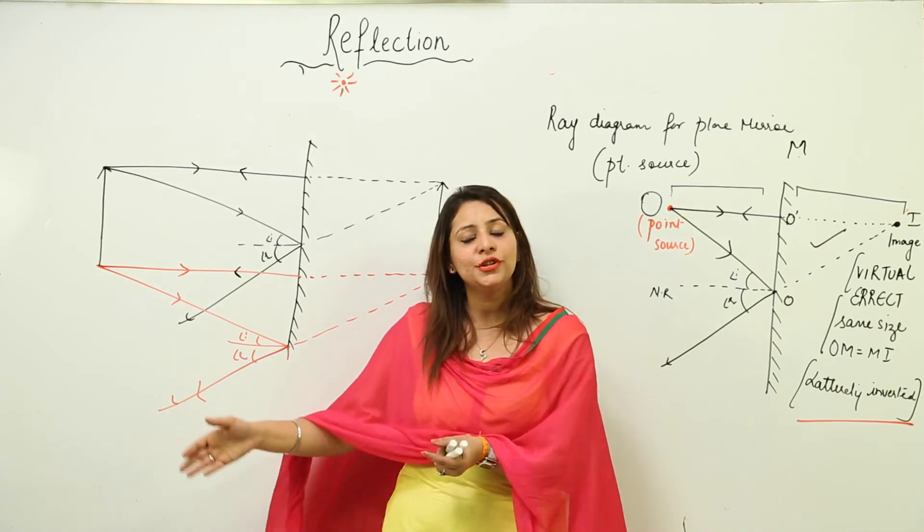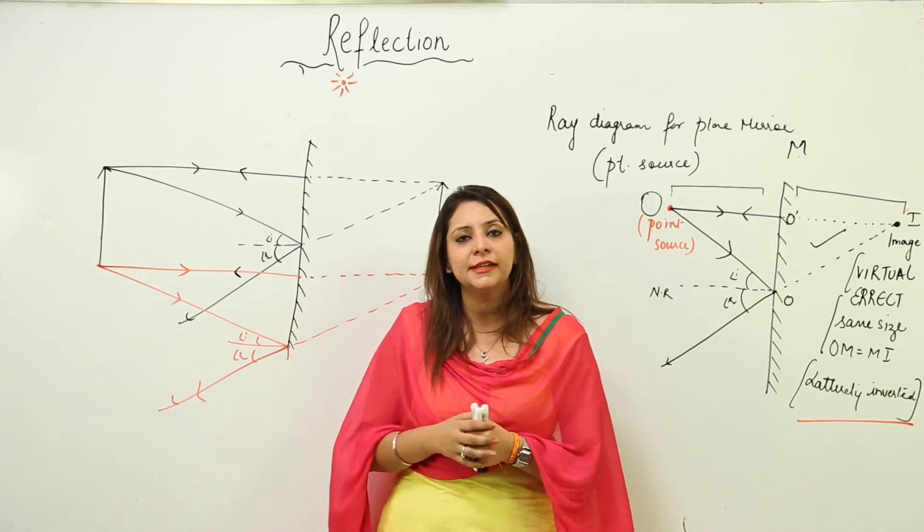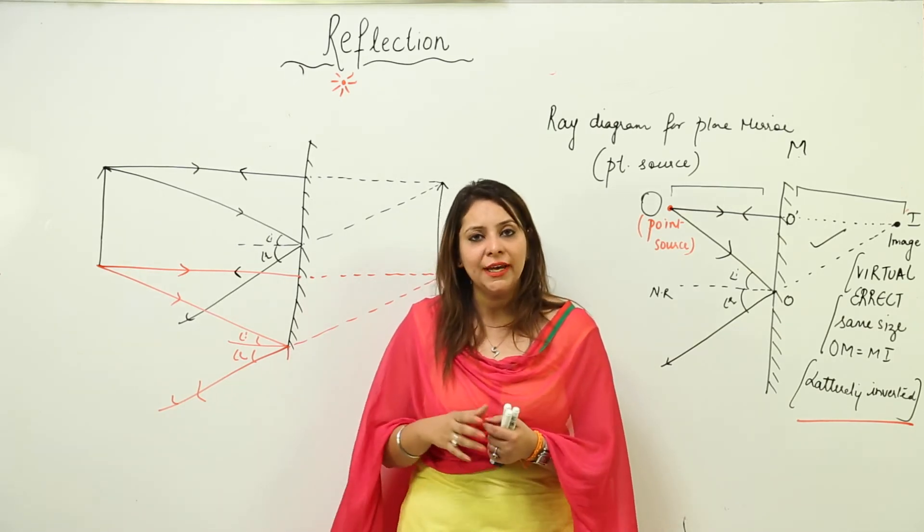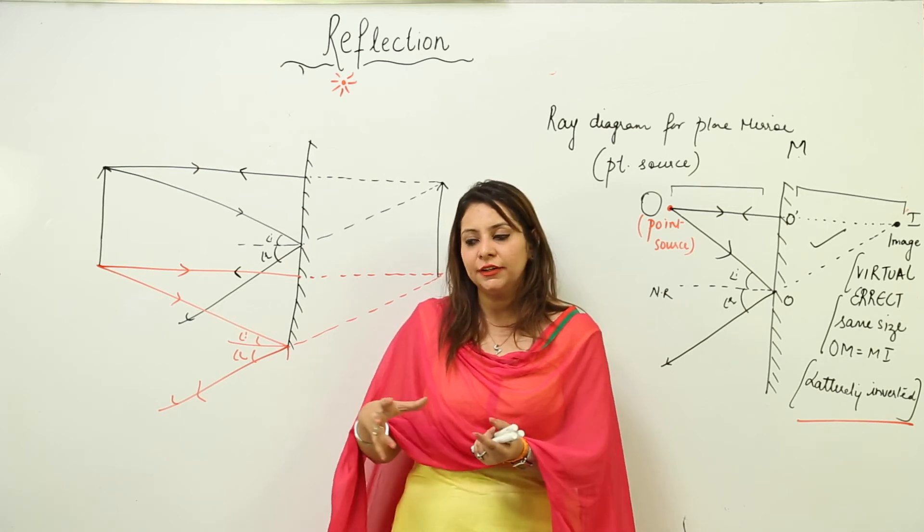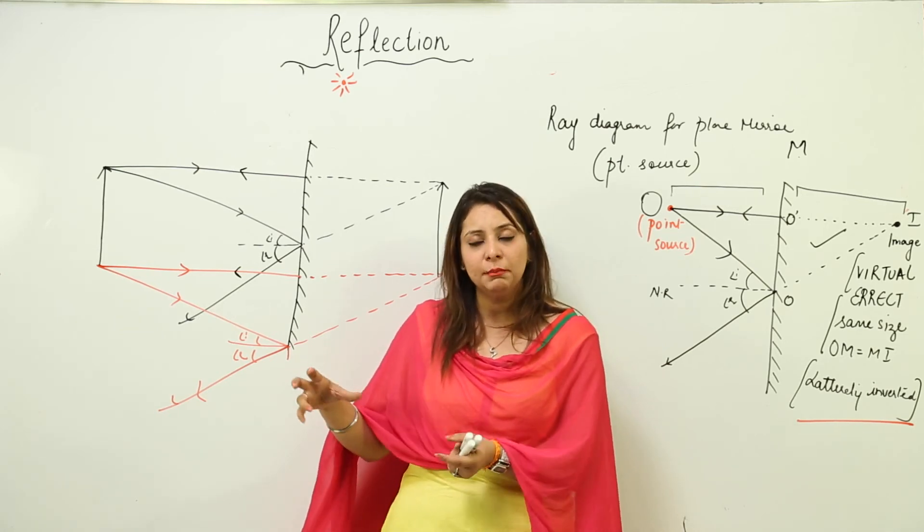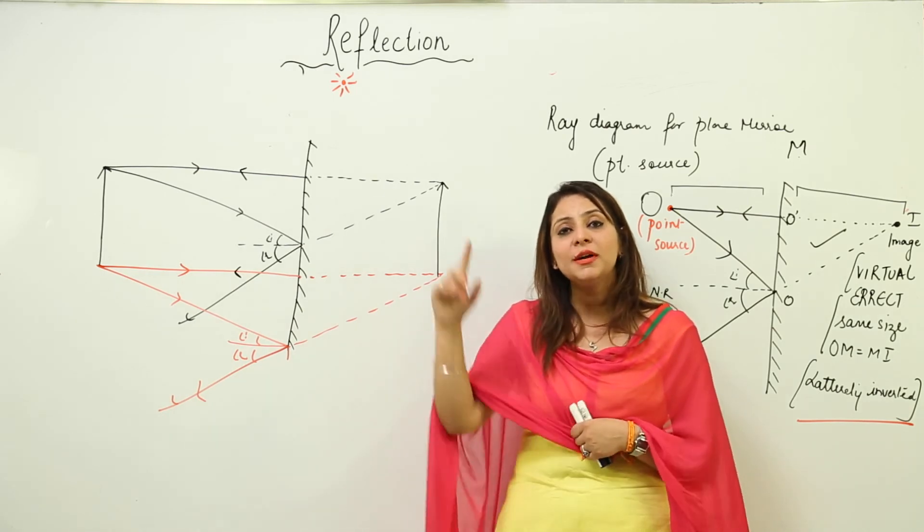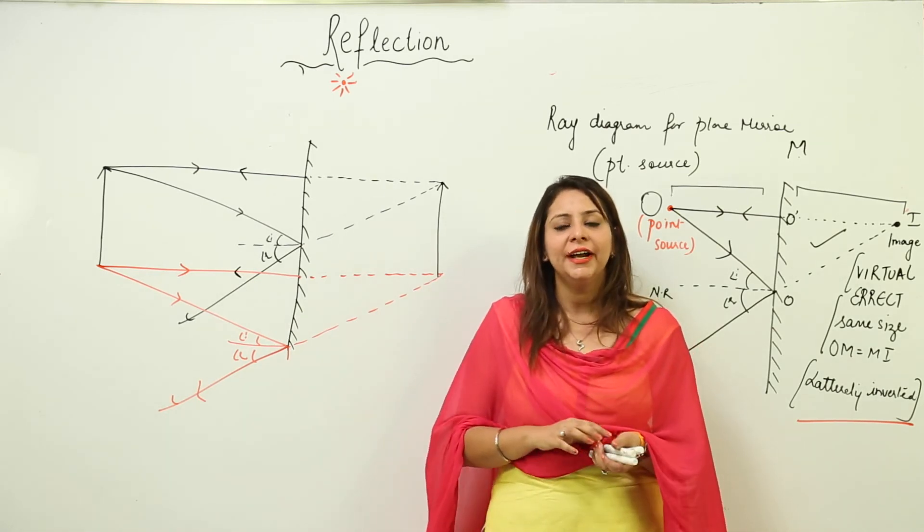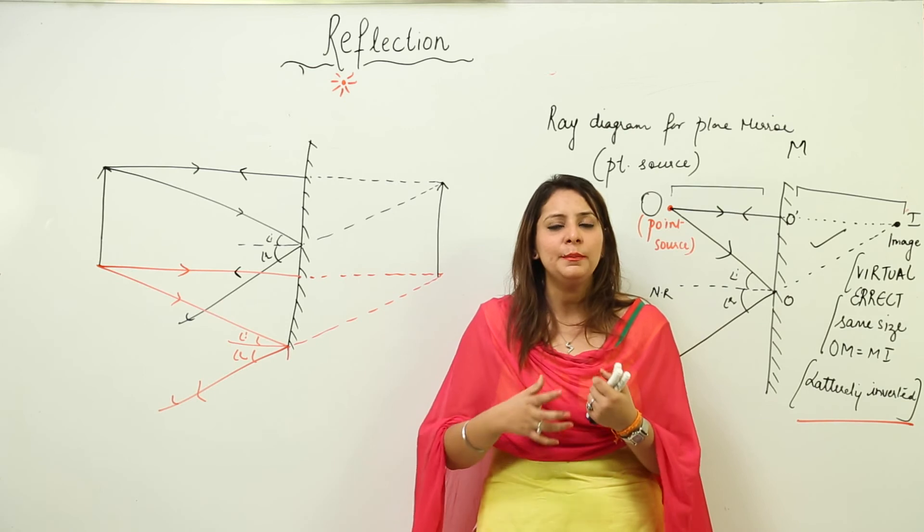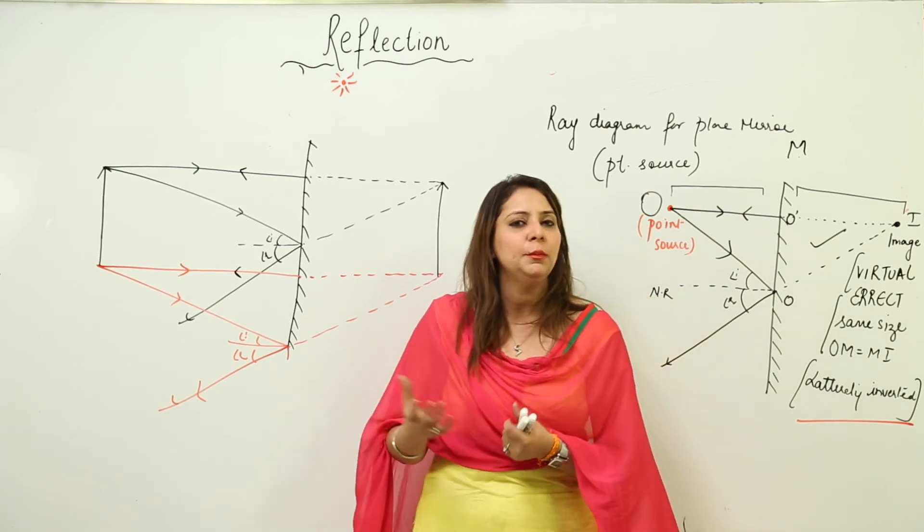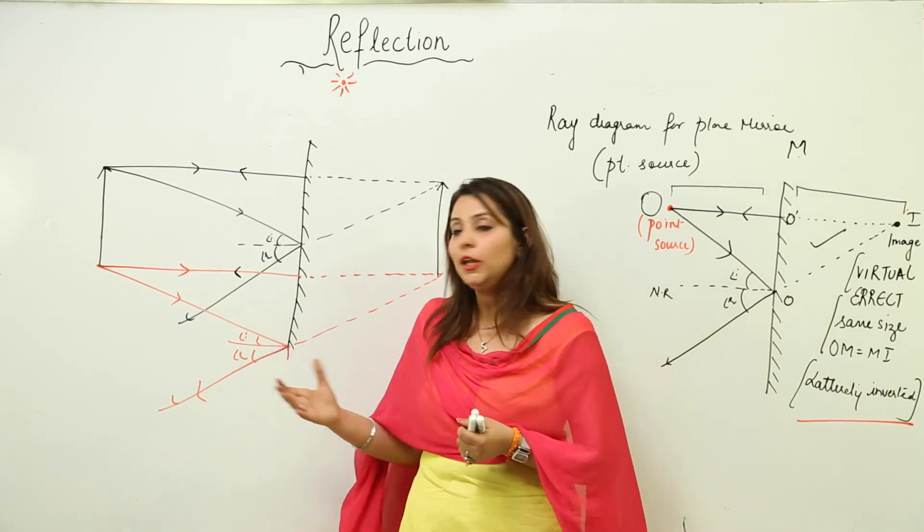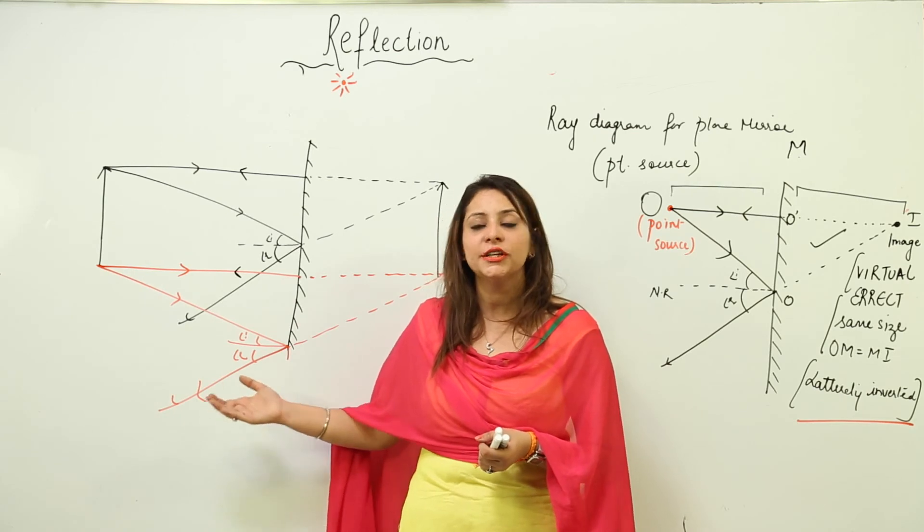And moreover, it is being used whenever you are in an optician room and you are checking your number for the spectacles. There what you use? You use the mirror to read the alphabets. So that means it is serving many purposes in many places.